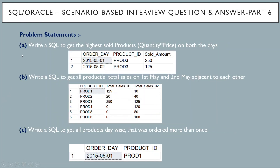So the first problem statement: write a SQL query to get the highest sold products on both the days. Here, sold products refers to the sold amount, which is quantity multiplied by price. It is asking to display the highest sold amount of the product with the product ID on both the days.